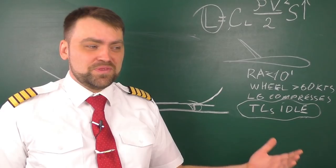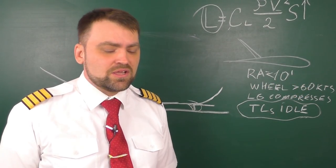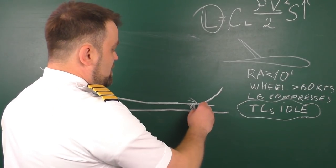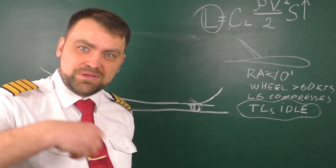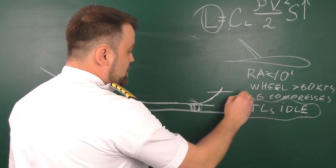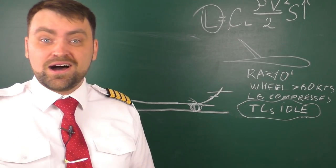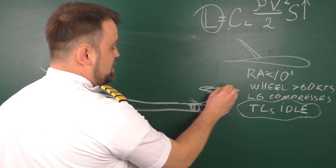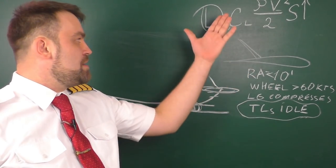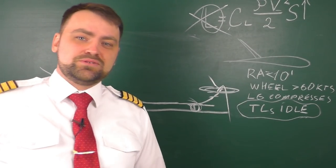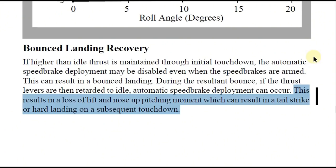What do we do? If we put the thrust levers to idle now, that will bring us to a hard landing for sure. Why? Because we've touched the ground: the landing gear is compressed, the wheels are spinning, the radio altitude is below 10 feet, and we put the thrust levers to idle. The spoilers deploy — the wing loses its lift — and the airplane falls down to the ground with a hard landing.